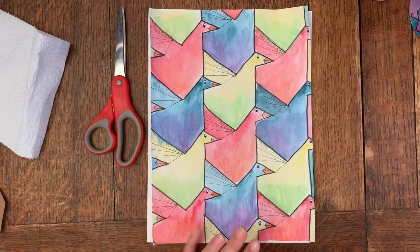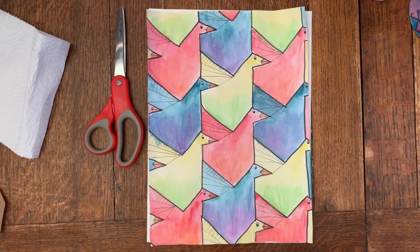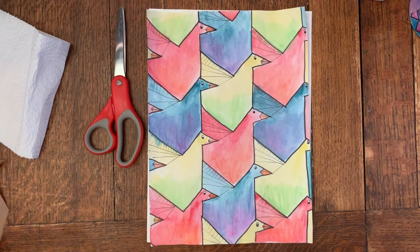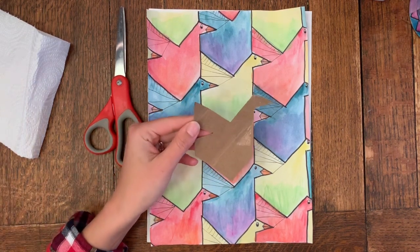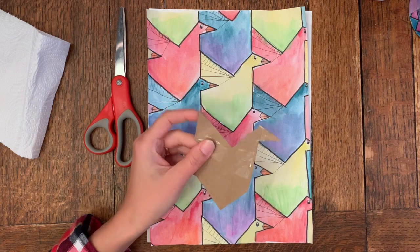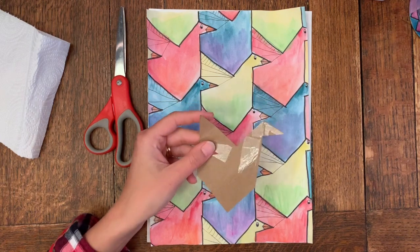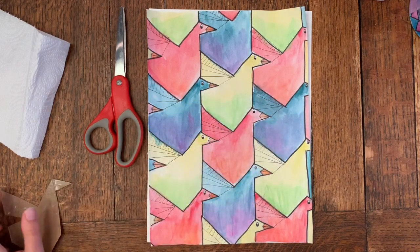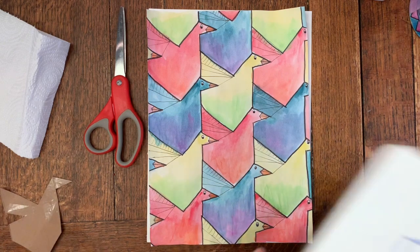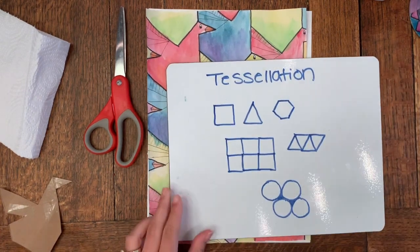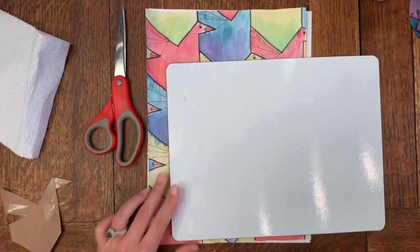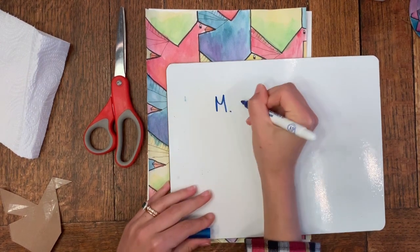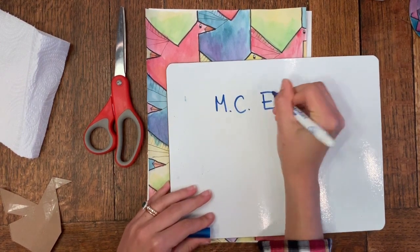We're going to be learning today how to make our own tessellating shape. I'm going to be teaching you how to make this bird, but once you learn the technique, the possibilities are endless for you to create your own. Our artist of the day is MC Escher.